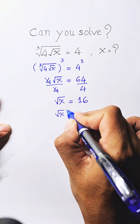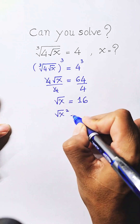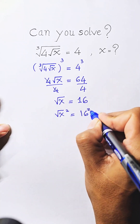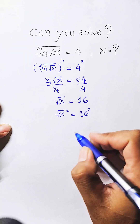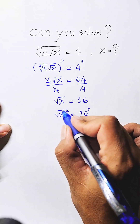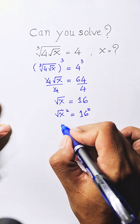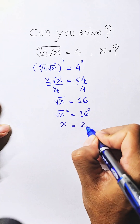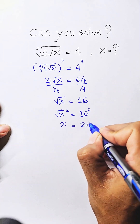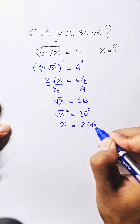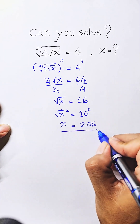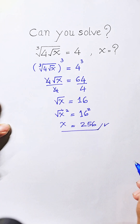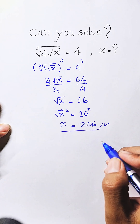Square root of 8 squared equals 16 squared. We simplify the square root with the square, and get 8 equals 256. So the value of 8 is 256, which is our answer.